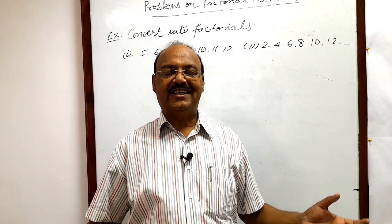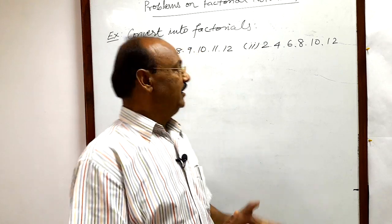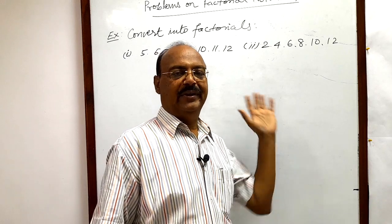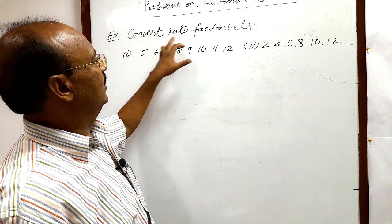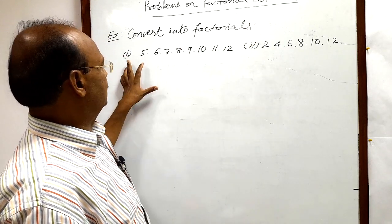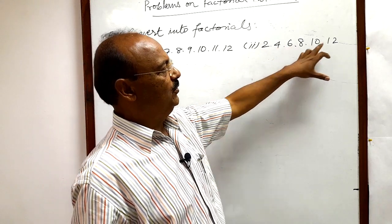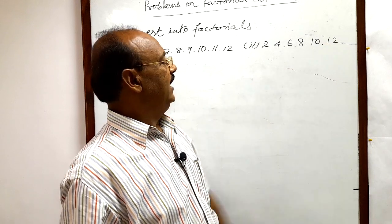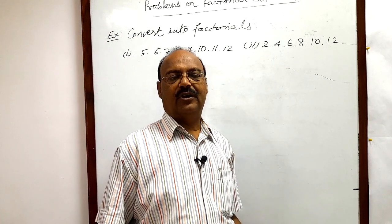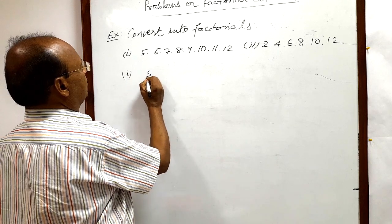Welcome students. We are going to discuss a very interesting question from the topic factorial notation. We are taking two questions so that your concept would be very clear by solving these two problems. We have to convert into factorials. The first question is 5 × 6 × 7 up to × 12, and the second question is 2 × 4 × ... × 12. We have to convert each of these two numbers into factorial notation.